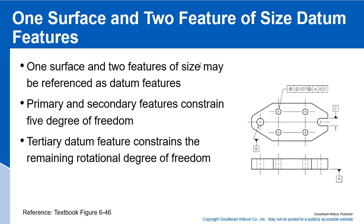One surface and two features of size may be referenced as datum features. Primary and secondary features constrain five degrees of freedom, and we still have rotation about this point, so we need our tertiary datum to block that rotation about axis B.